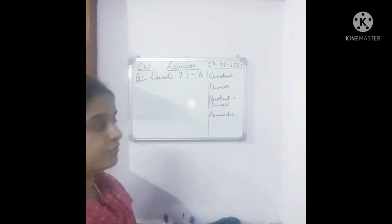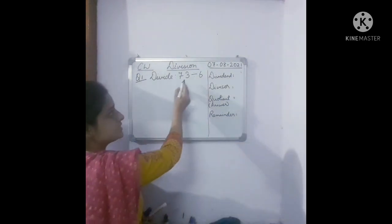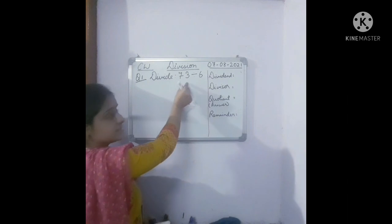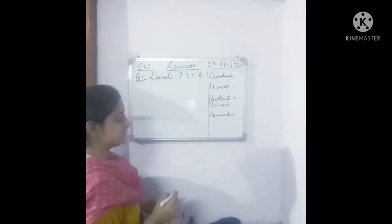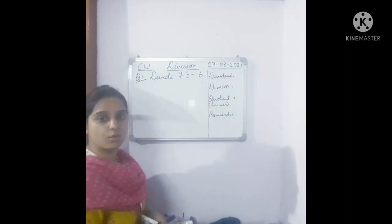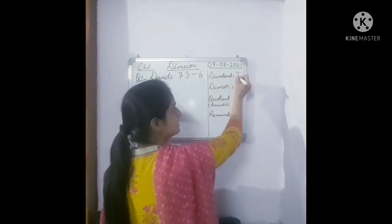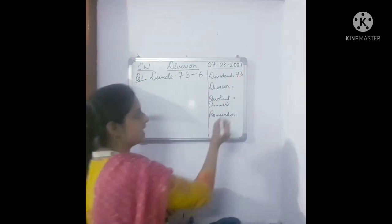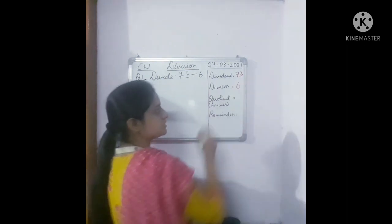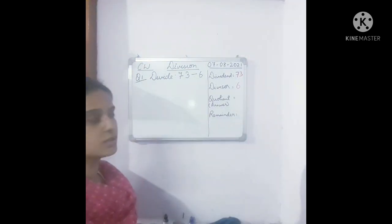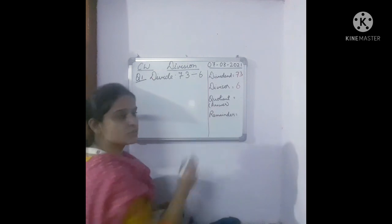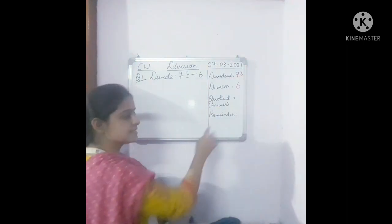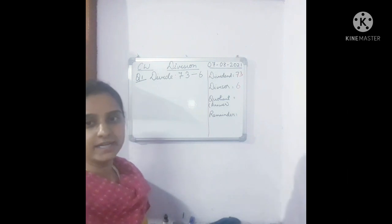Let's do our first question: divide 73 by 6. The first number is our dividend — 73 is our dividend. Then 6 is what, children? Divisor — the number by which the dividend is divided. Quotient is the answer which we are going to find. And let's see whether we get a remainder or not.